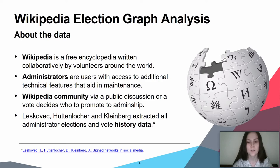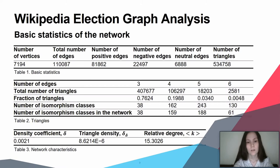Leskovec, Huttenlocher and Kleinberg extracted this information. There are about 2,800 elections from a complete dump of Wikipedia page edit history from January 3rd, 2008. Out of this, 1,200 elections resulted in a successful promotion, while about 1,500 elections did not result in the promotion.